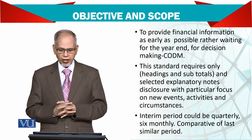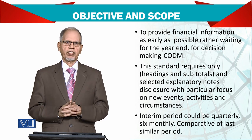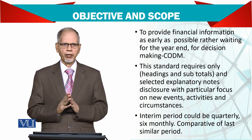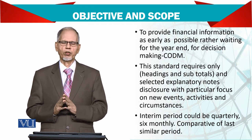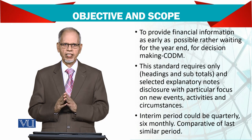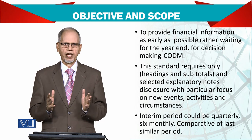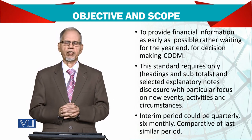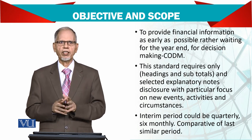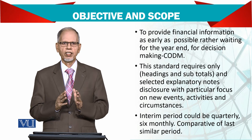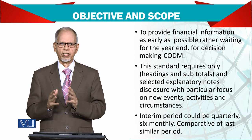Disclosure should have particular focus on new events — something that happened during the quarter — so there should be detail about those events in the notes to the accounts. Activities and circumstances: for instance, in Pakistan and all over the world, because of COVID, things have been moving very fast. So they want to see how these circumstances affect the results.